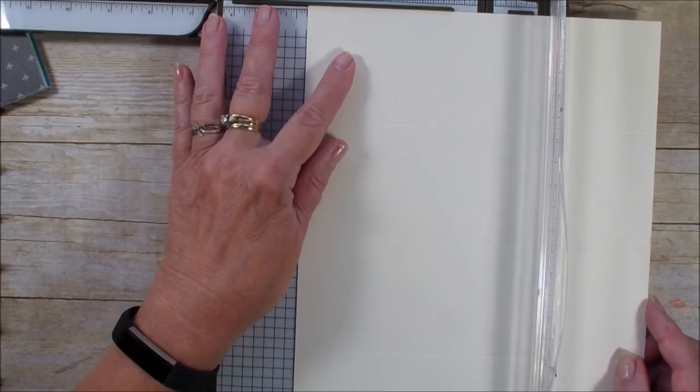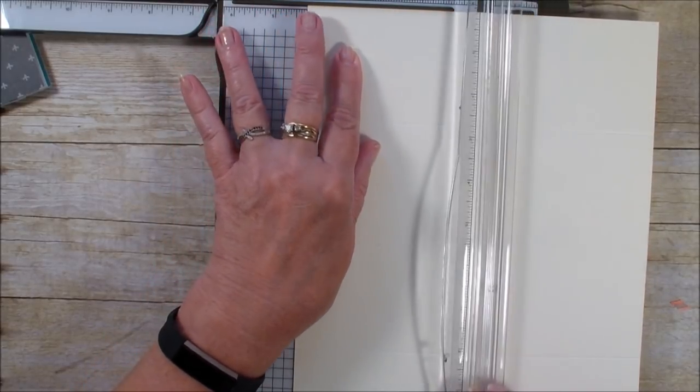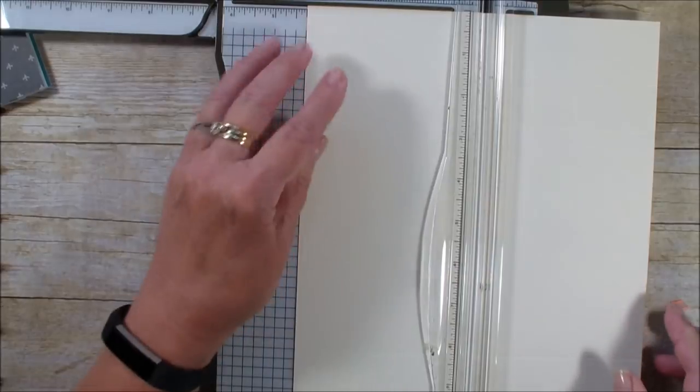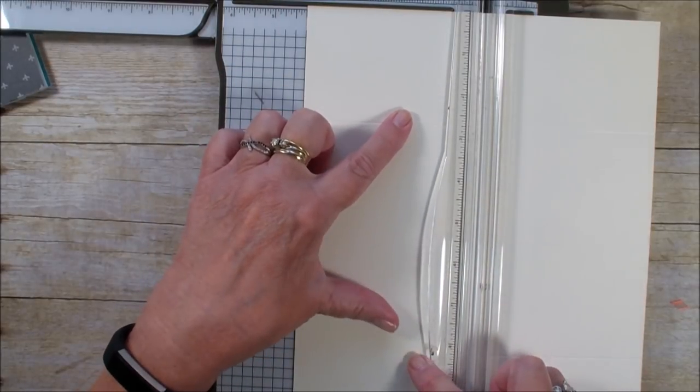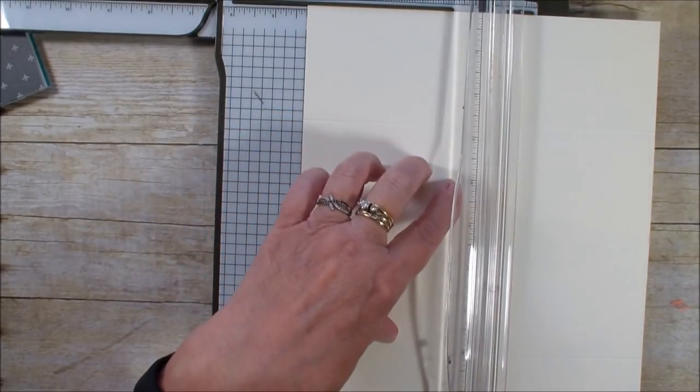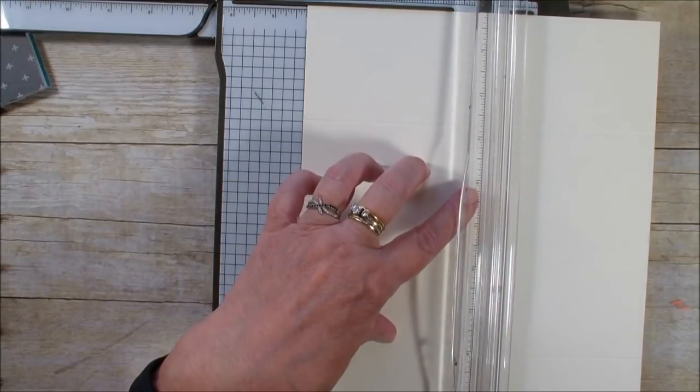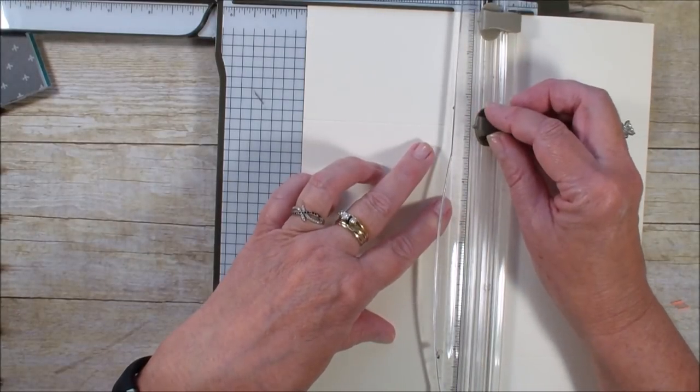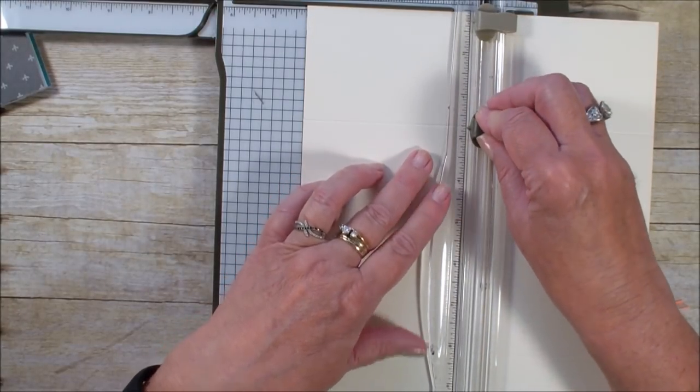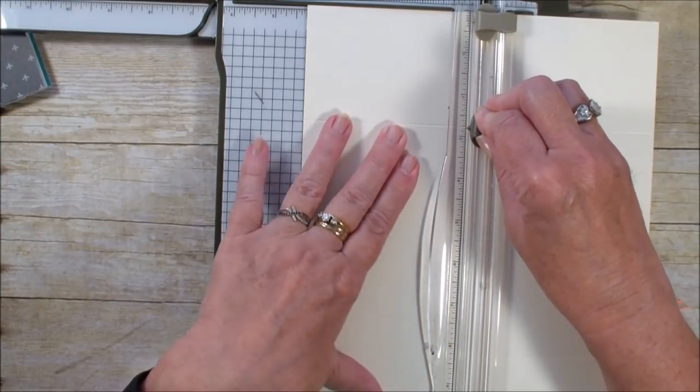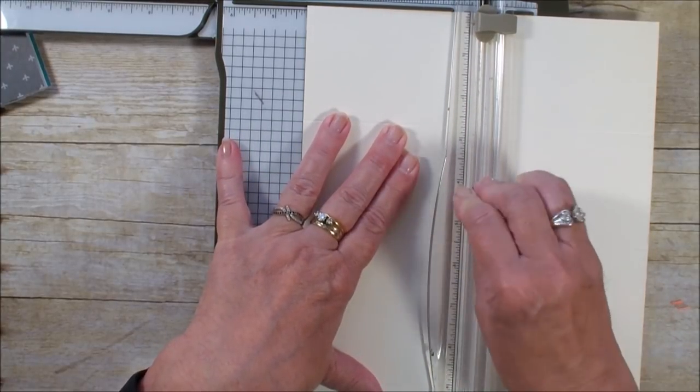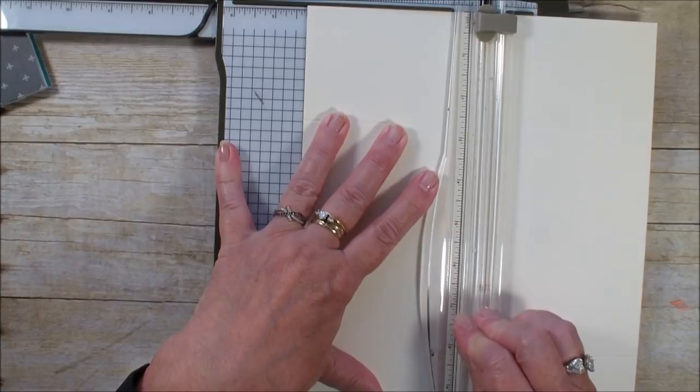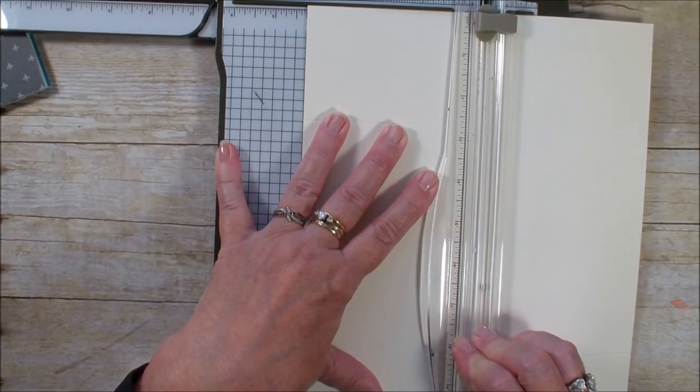Then she flipped it to the 8 1/2 side and scored at the 4 1/4, and then what she did was she cut between the 3 score lines. So we're going to bring our cutter blade up, and we're going to start right on that score line, score through the center, and down to the 3rd score line.